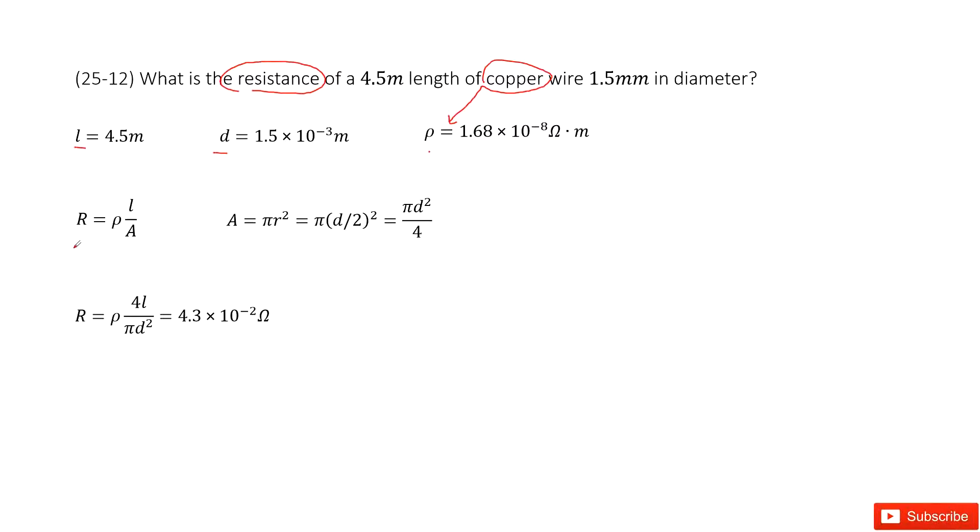You will consider the equation: the resistance equal to the resistivity times L divided by A. A is cross-sectional area and A equals pi R squared. R is radius. We can replace radius as diameter divided by 2 and again the function looks like this one.